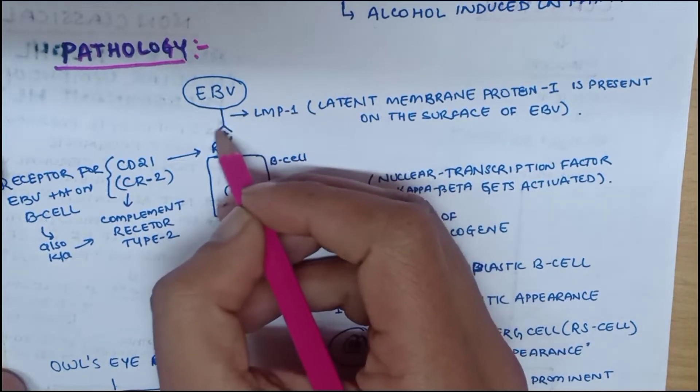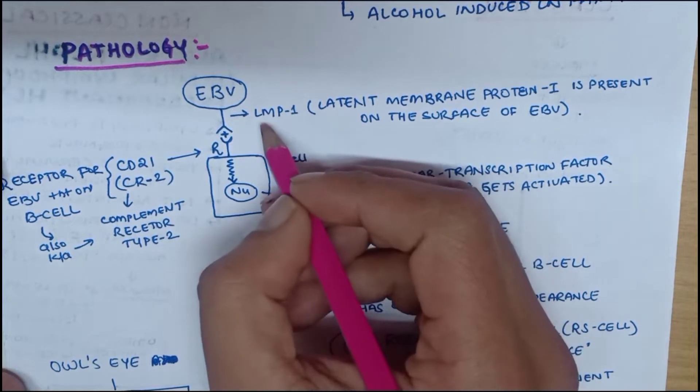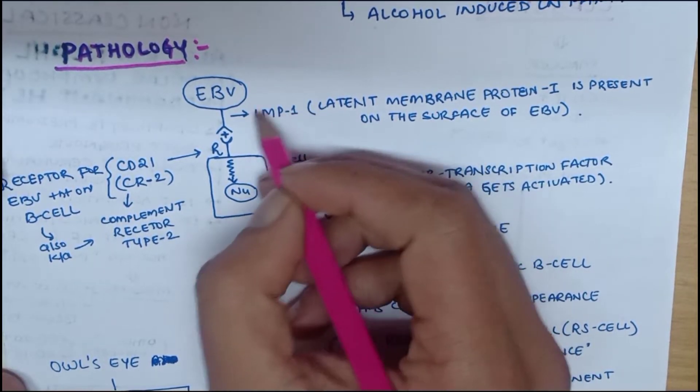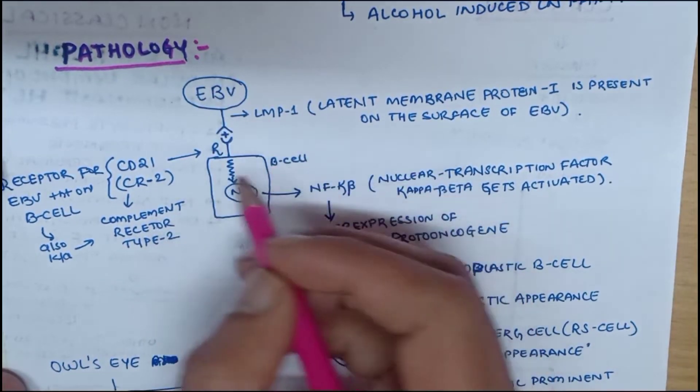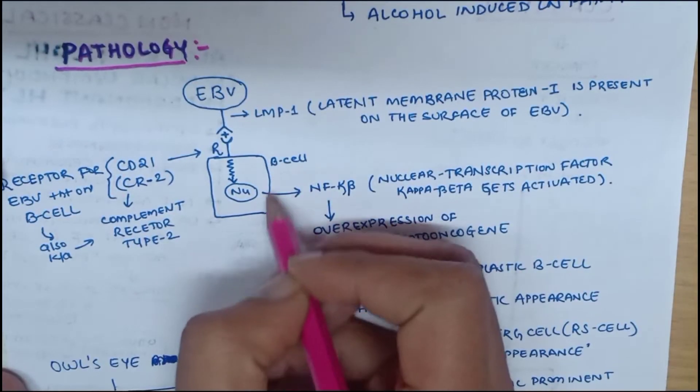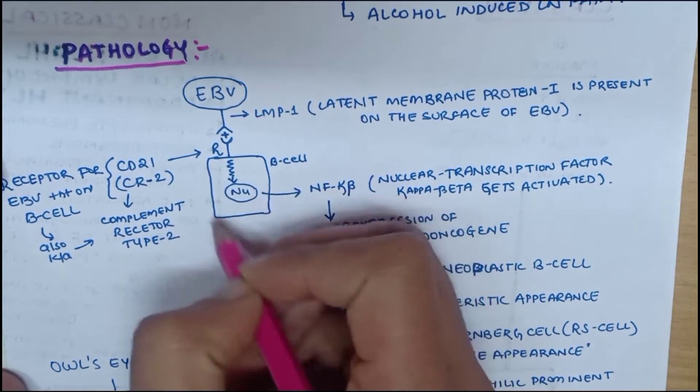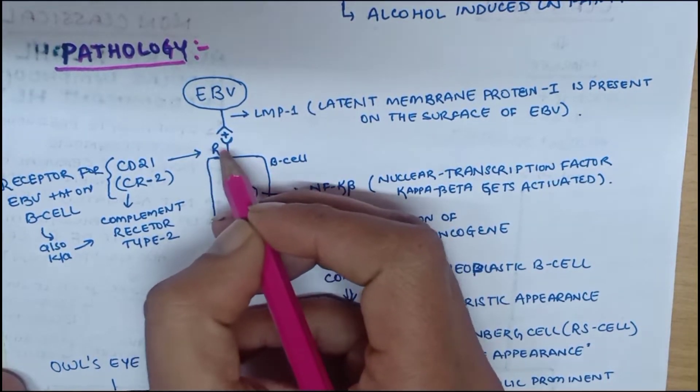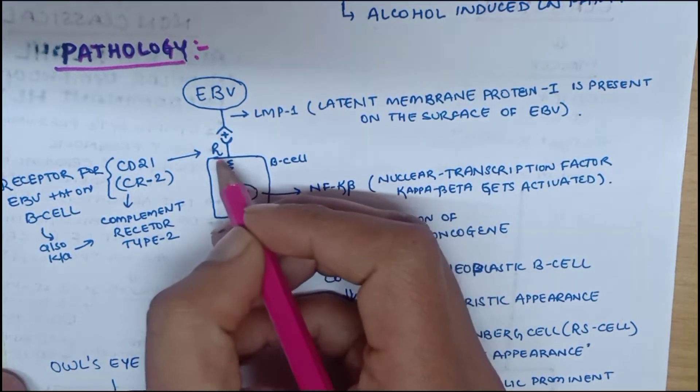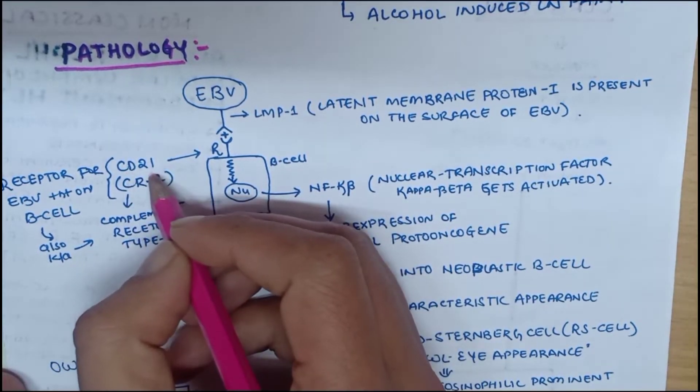Epstein-Barr virus has a protein on its surface called LMP1 protein, or latent membrane protein 1. This protein gets attached to a B cell. The B cell has a receptor for Epstein-Barr virus present on its surface, and this receptor is known as CD21 receptor, also known as complement receptor type 2.